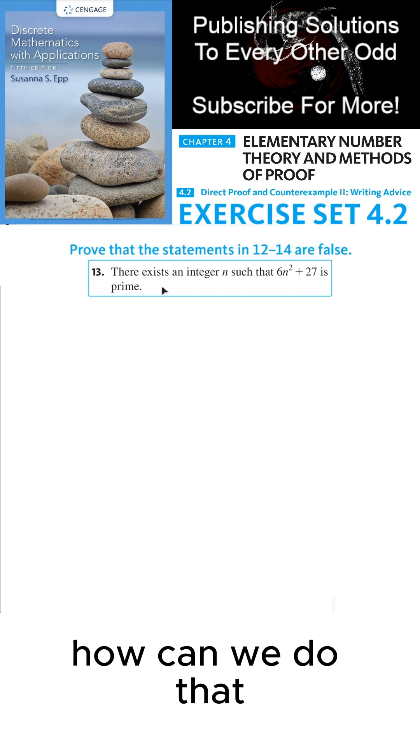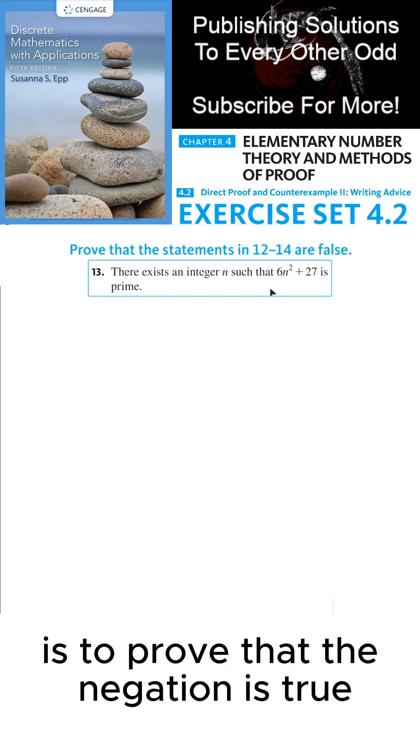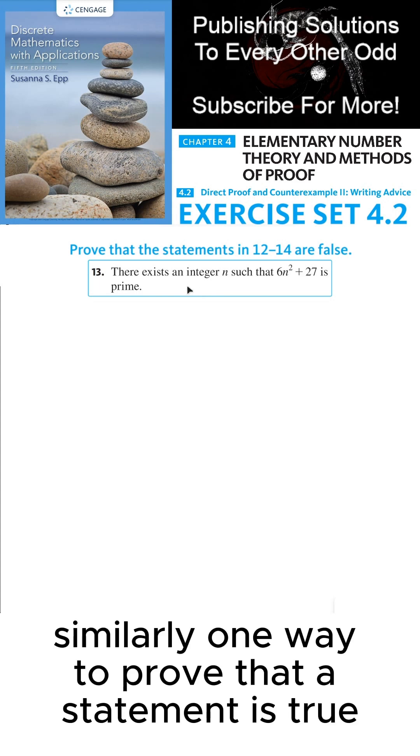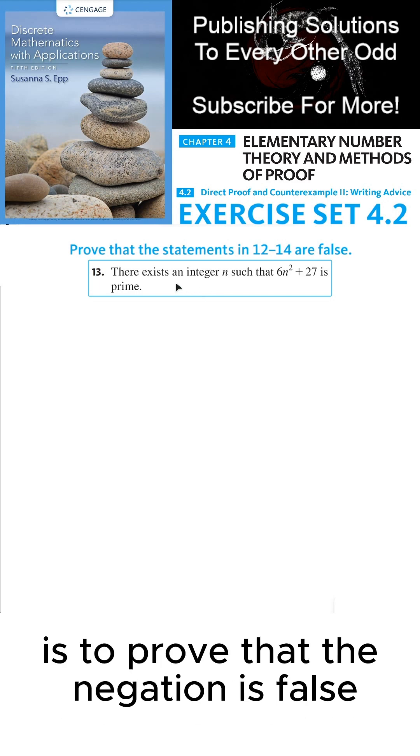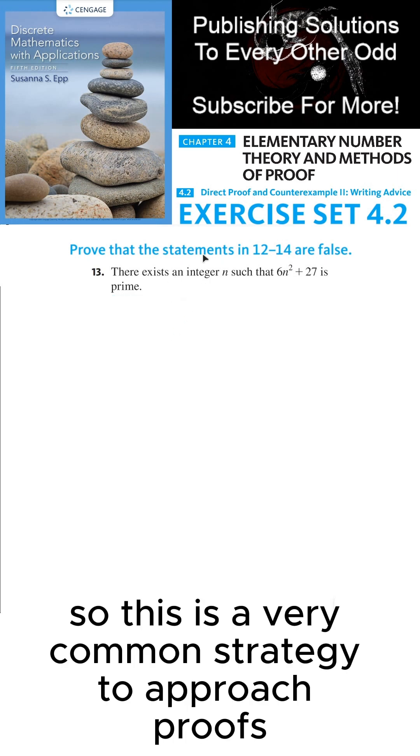How can we do that? Well we can do that by proving that the negation of this statement is true. One strategy to prove that a statement is false is to prove that the negation is true. Similarly, one way to prove that a statement is true is to prove that the negation is false. So this is a very common strategy to approach proofs.